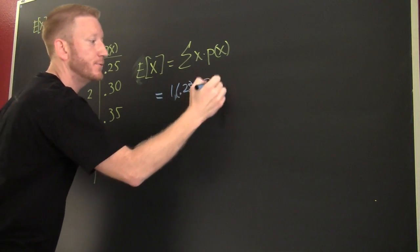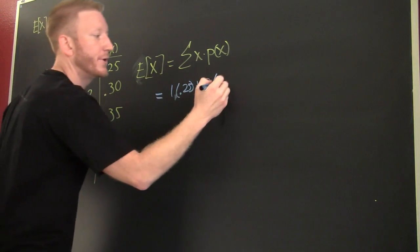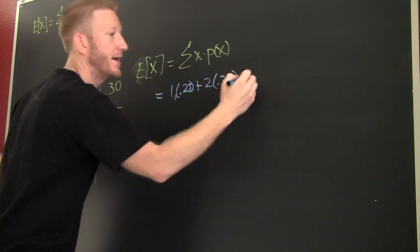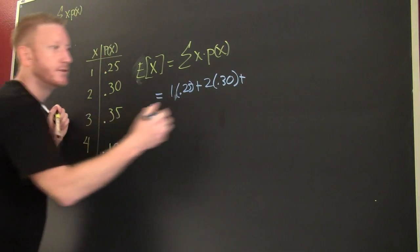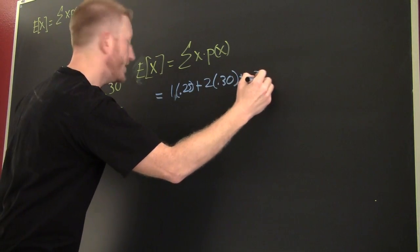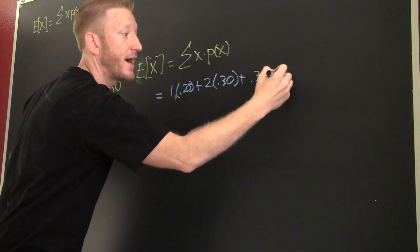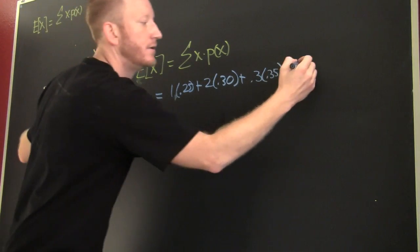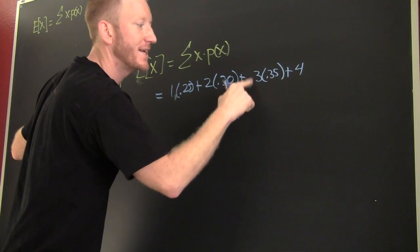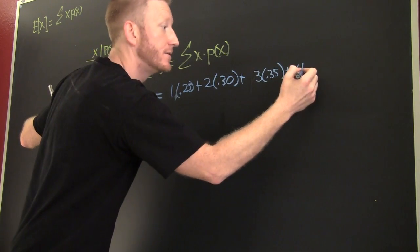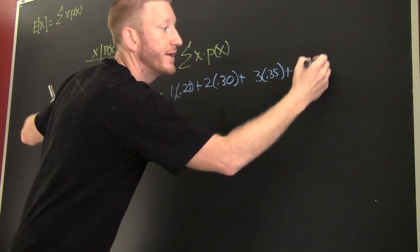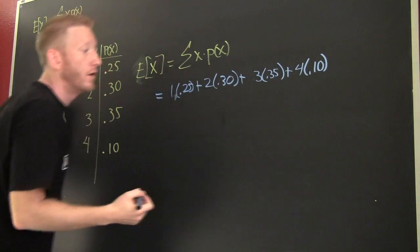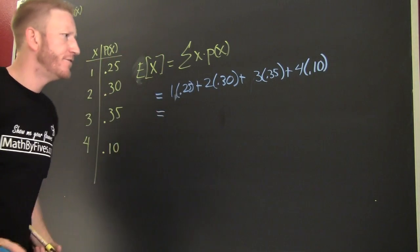Plus this one times that one: 3 times 0.35, plus this one times that one: 4 times 0.10.